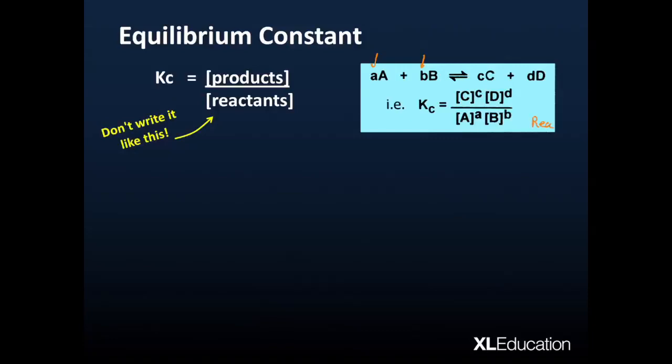These are our reactants, and we're going to have A to the power of its coefficient. So A to the power of its coefficient, and similarly, B, that substance, the concentration of B, to the power of its coefficient. We do the same on the top with the products. We're going to take the concentration of substance C and put it to the power of its coefficient, small c, and similarly, for D. So that's pretty much how that expression is put together.